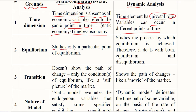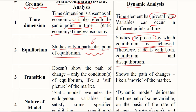The second ground is equilibrium. Static analysis studies only a particular point of equilibrium — one point is being studied. Whereas in dynamic analysis, it is the process by which equilibrium is achieved, not just one point. It deals with both equilibrium and disequilibrium, as at some points in time equilibrium can be lost. Both states are studied using time as the determining variable.